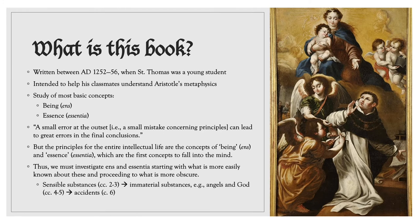In order to fulfill this task, St. Thomas proceeds in the following way through the course of this book. First, he starts with sensible substances and explains how essence is found in sensible substances — this happens in chapters 2–3. Next, St. Thomas deals with how essence is found in immaterial substances, or what he likes to call simple substances — these are angels, God, and the human soul — this happens in chapters 4–5. Finally, St. Thomas addresses how essence is found in accidents, which happens in chapter 6.